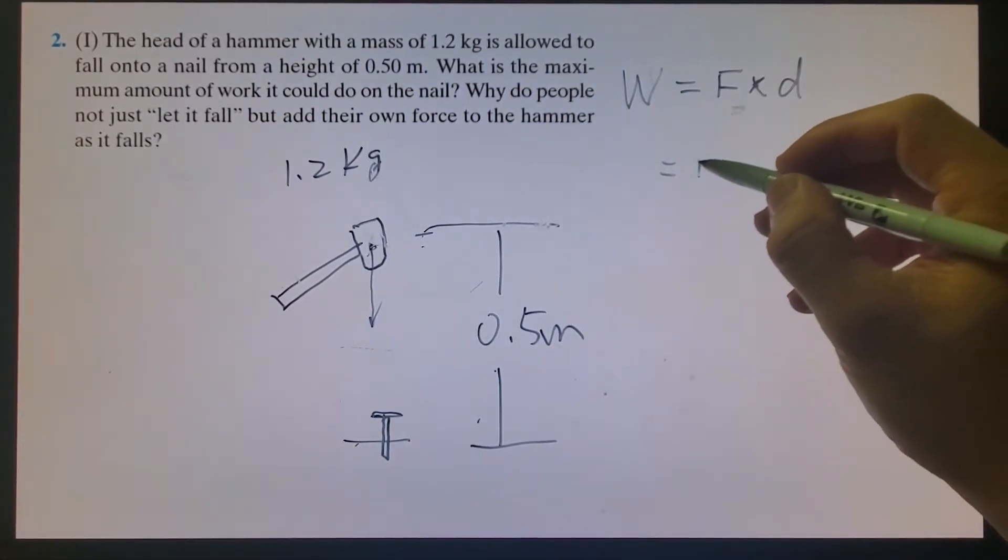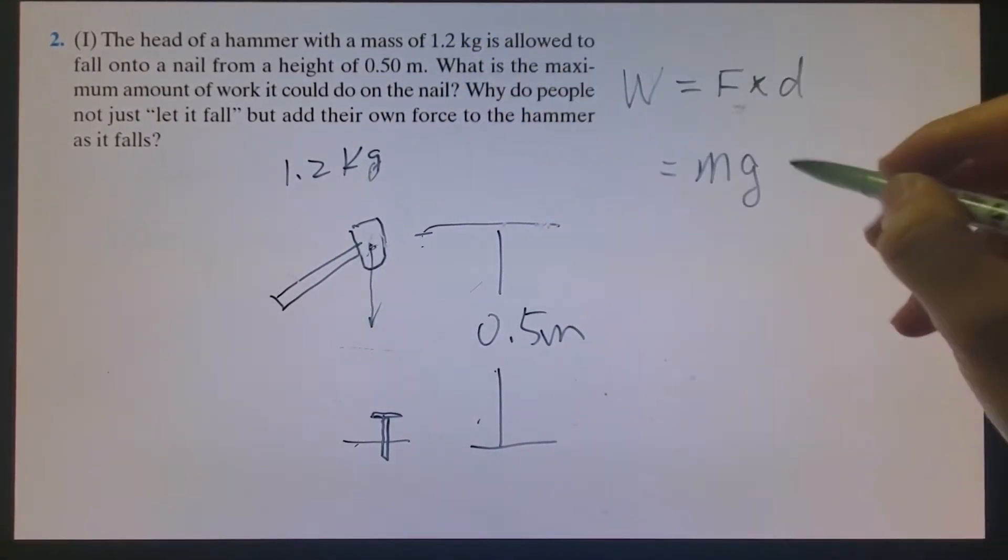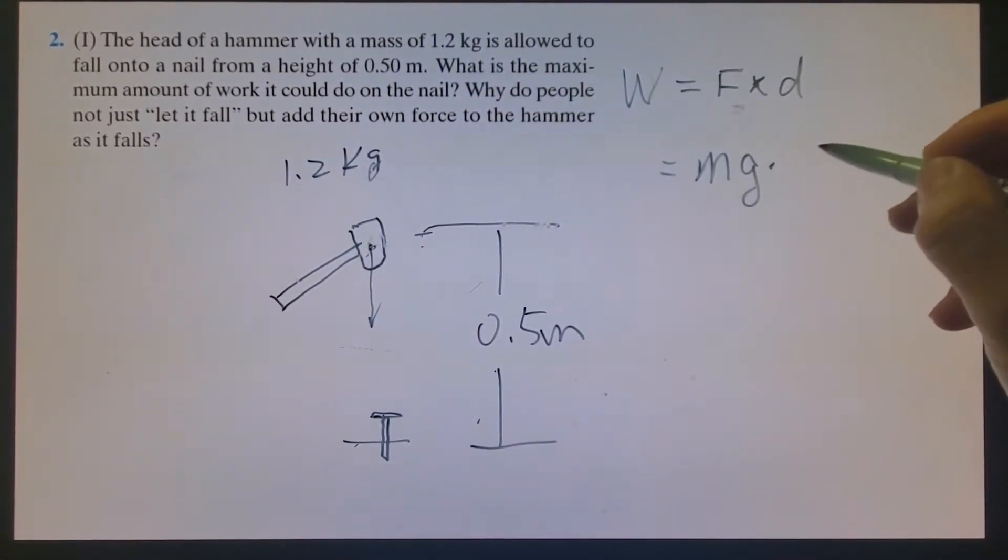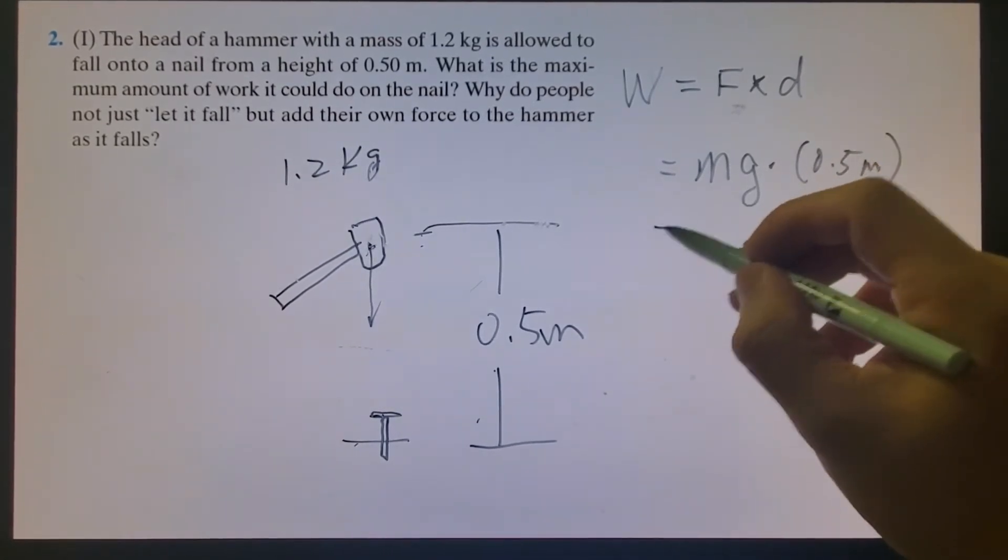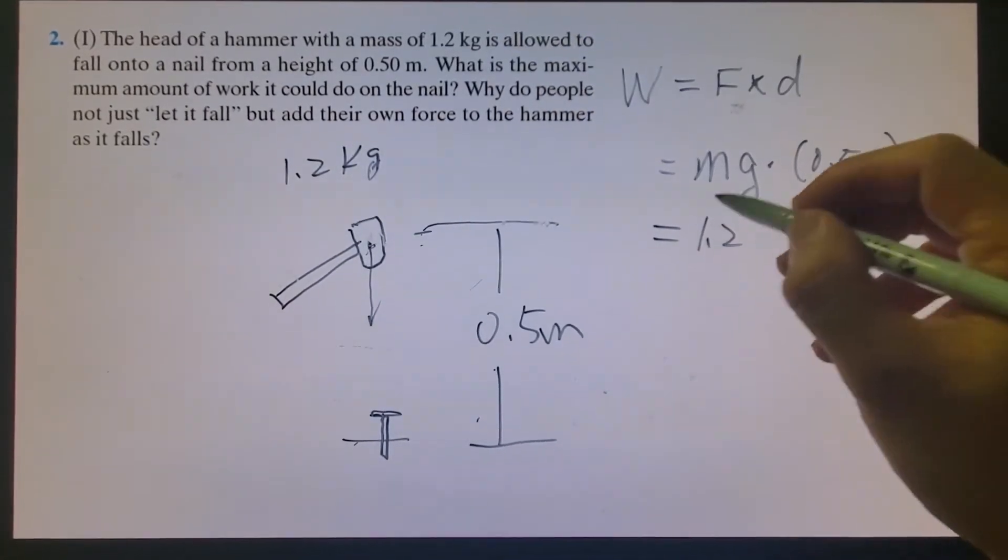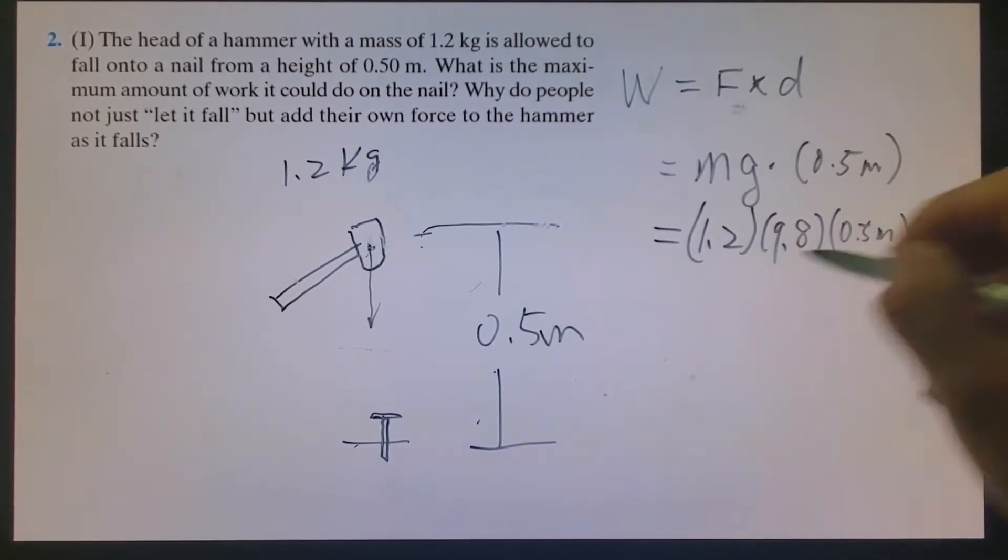So m is 1.2, times g which is 9.8, times 0.5 meter. That equals 1.2 times 9.8 times 0.5.